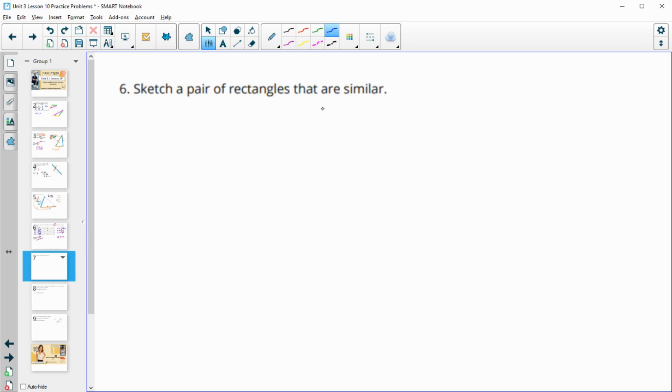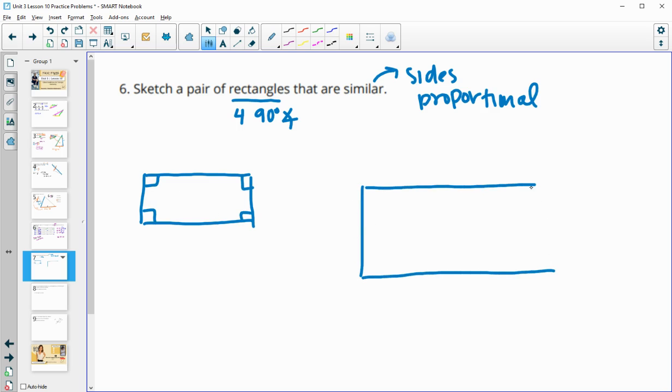All right. Number six says sketch a pair of rectangles that must be similar. Now, when we're doing rectangles, remember that rectangles have to have four 90 degree angles. And then similarity would mean that our sides need to be proportional. So you can literally make up anything you want here. Just make sure that you've got your angles marked as right angles in both. And then when you draw your second one, just make sure that your sides are proportional to your first one, so whatever you decide to label them. So if I label this one and three, and then I want this to be 10 times bigger, then I could put these as 10 and 30. Or if I wanted it to be two times bigger, I could put these as two and six. Just make sure that you have the same scale factor that brings one to the next.